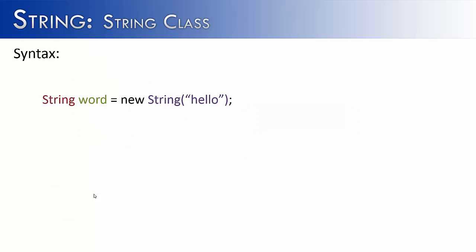So it follows the same format as the scanner class, or any object for that matter. You would say string word equals new string hello. You're going to have the name of the class, the name of the object, and the constructor, which is going to be the same name as the class. So that's why we say string again. And then you can see what's being passed to it is the word hello. And hello is going to be what's stored inside of the object that word is referencing.